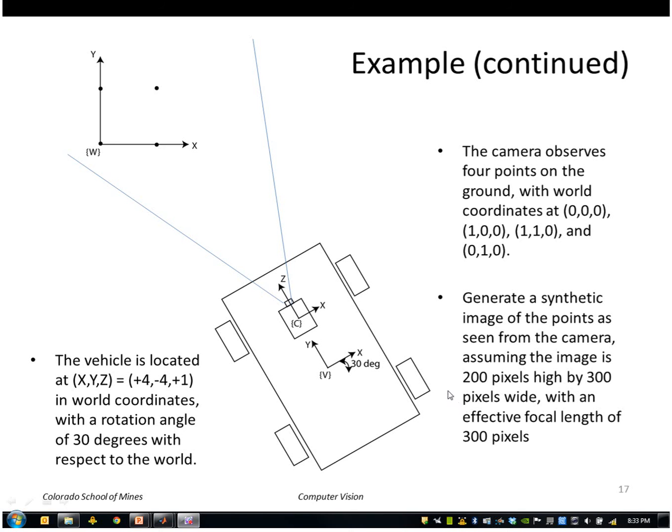So we want to do something similar to what we did before. Namely, we want to project our point by multiplying the K matrix times the external camera matrix times some world point.